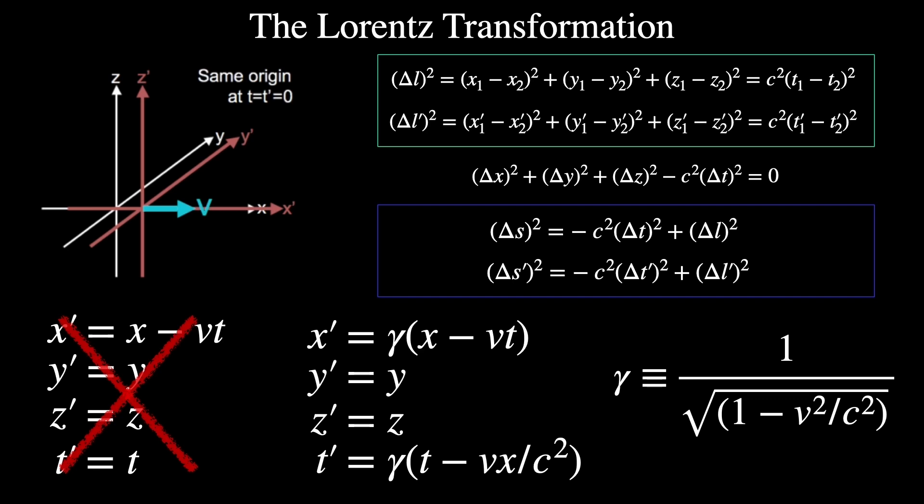Let's say our two events are the turning on of a lightbulb and the detector receiving the light. In our home unprimed frame, the distance the light travels is delta L squared. And that distance is just like the Pythagorean theorem, except for each coordinate we have two locations in each dimension, one for the starting place of the light and the other for the detector.